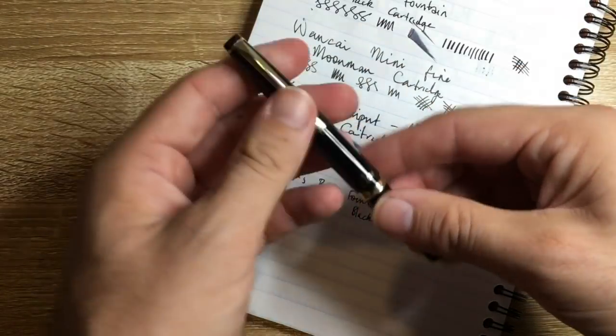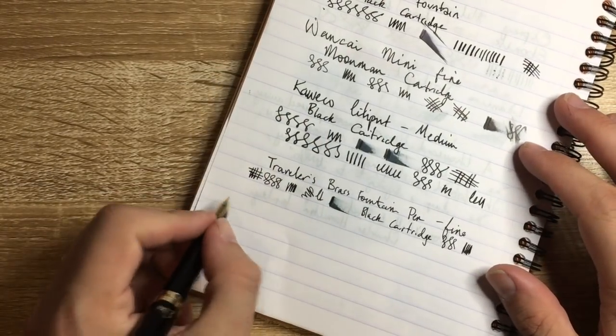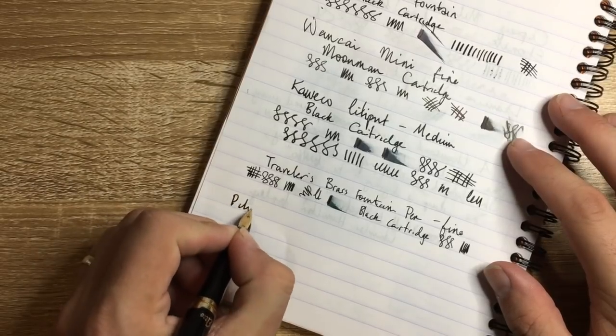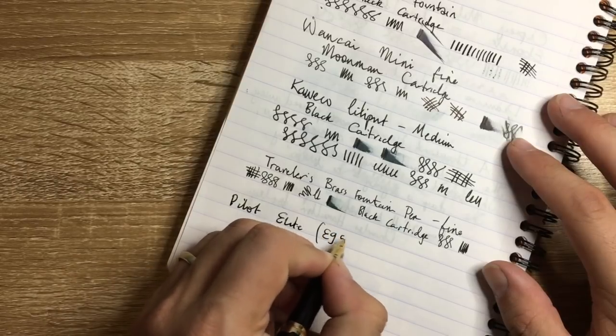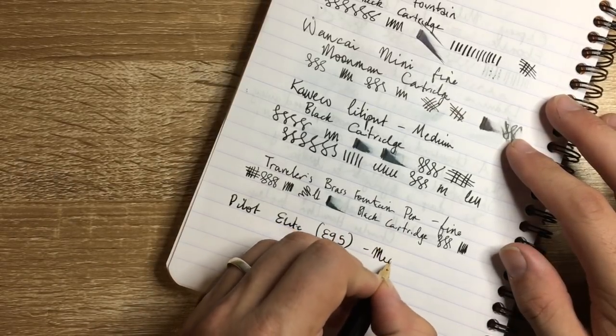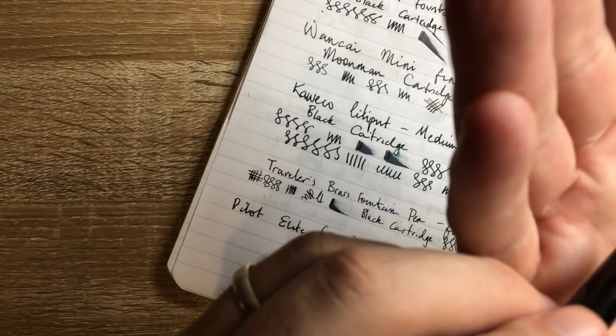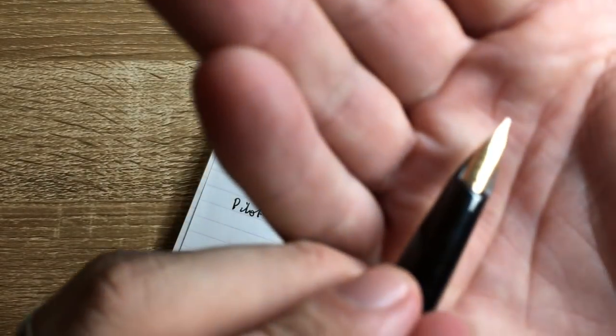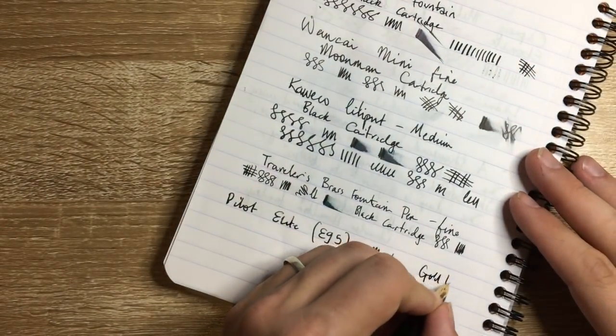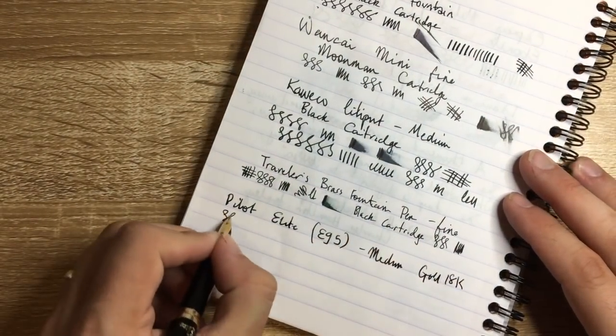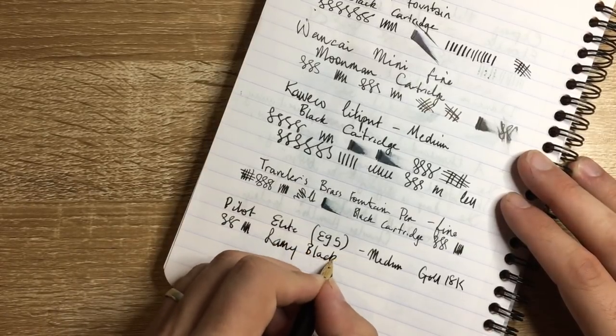Next is the Pilot Elite. Now, this, as I said, is one of my favorite, probably my favorite pocket pen. It's probably one of my favorite pens full stop at the moment. Pilot Elite. As I said, I think it's the E95 or something like that. This is a medium. And it's a gold nib. I think it's, can't quite make it out, but 18 karat maybe there. Yeah, but it's a lovely pen. It's smooth. This ink is Lamy Black. As I said, I have this in a converter.